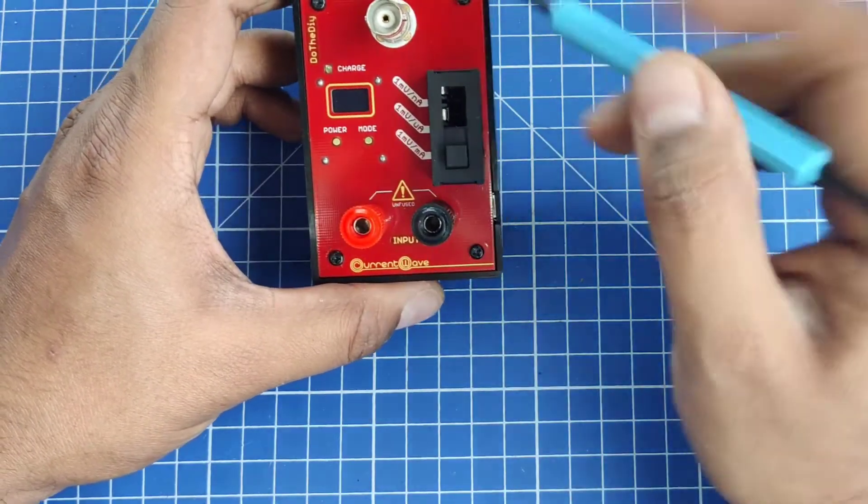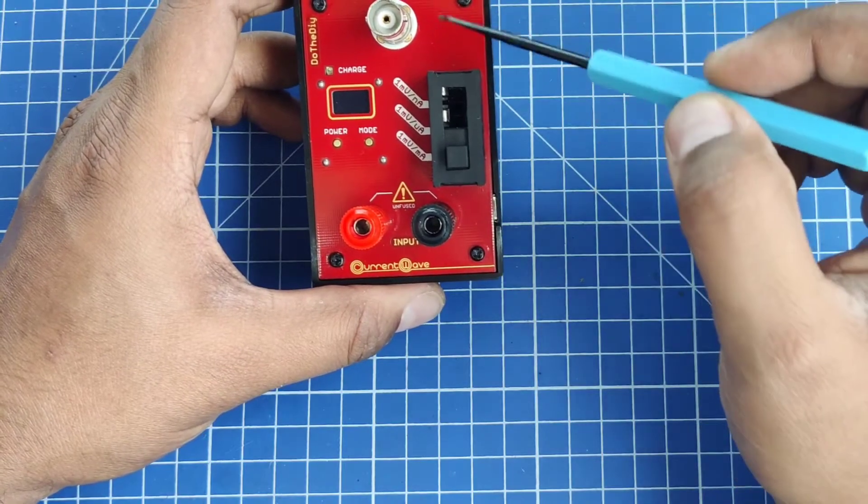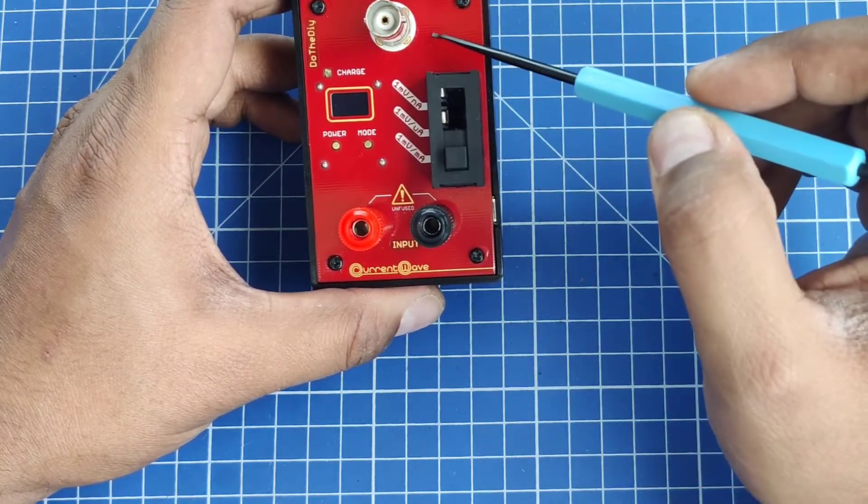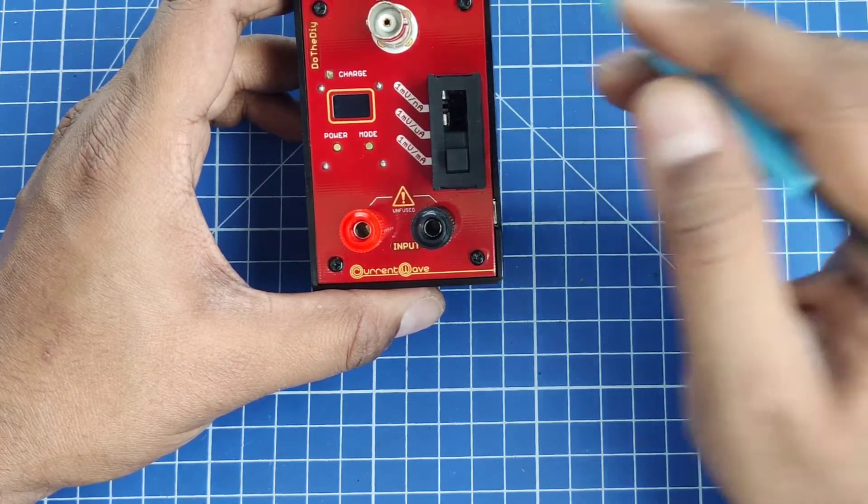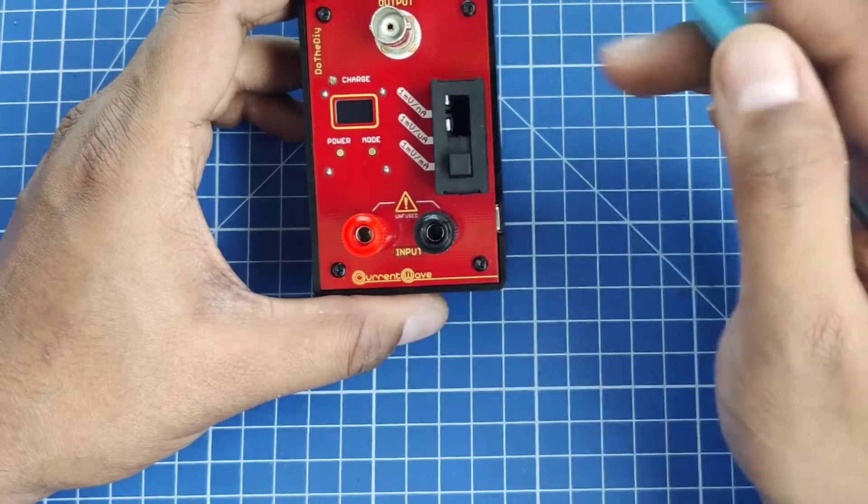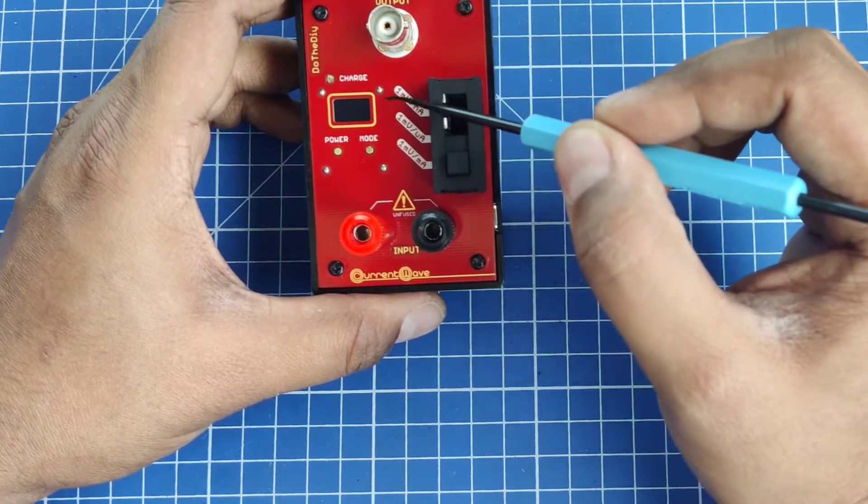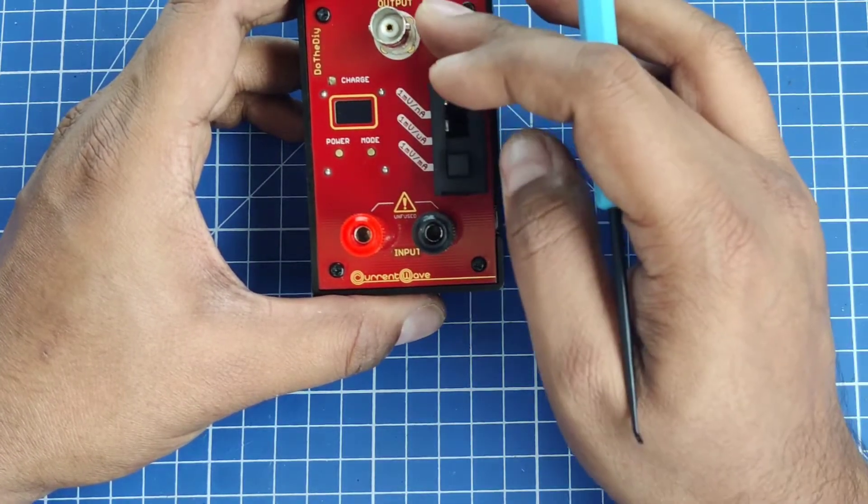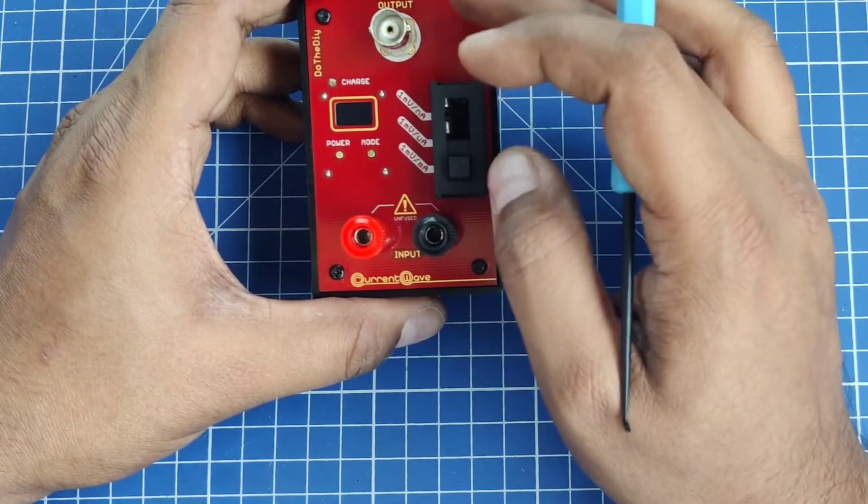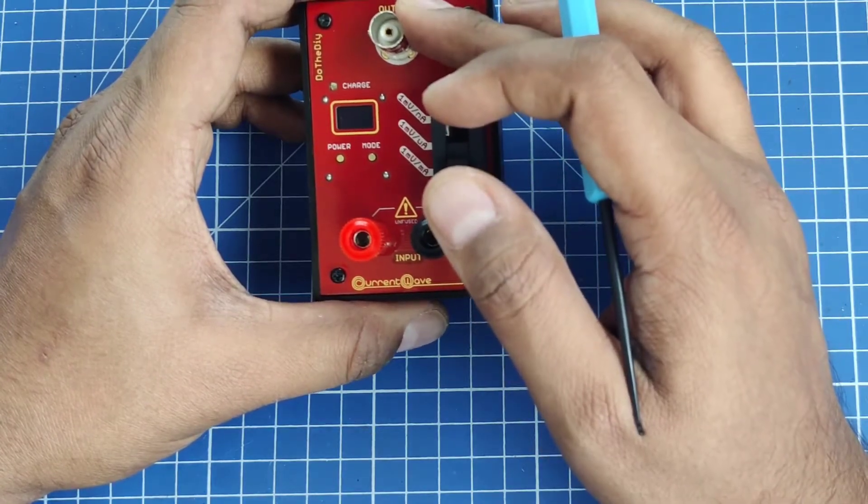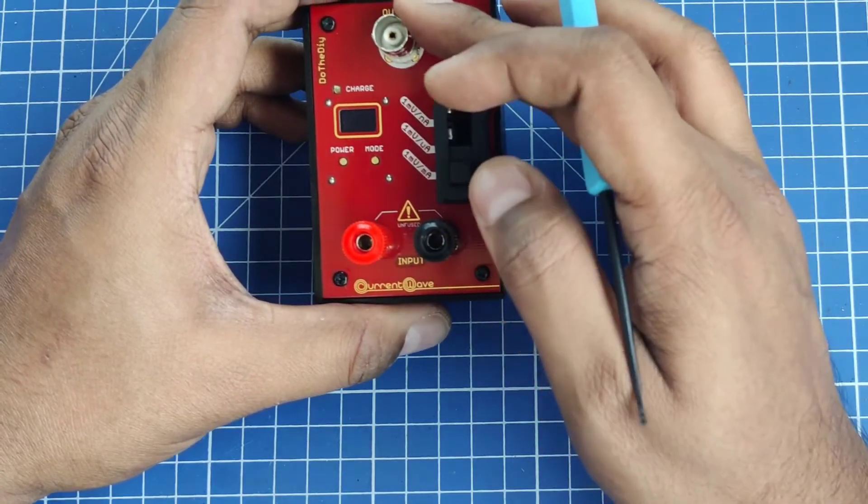For the output side, in the original design there are two banana jacks, but I've eliminated those and added a BNC connector. Now this unit can measure and show the reading here, but if you want to see the output on oscilloscopes, this BNC connector can be used.